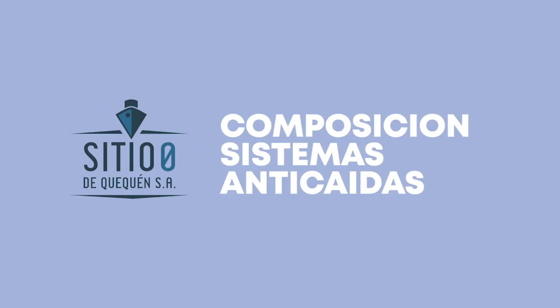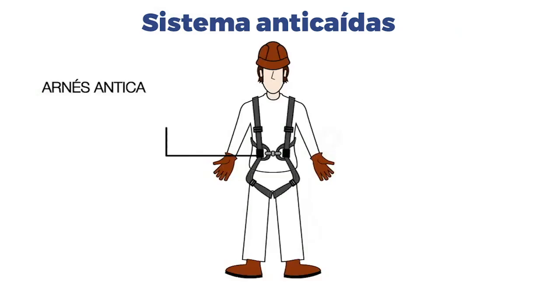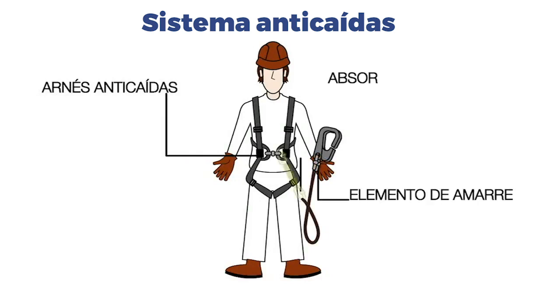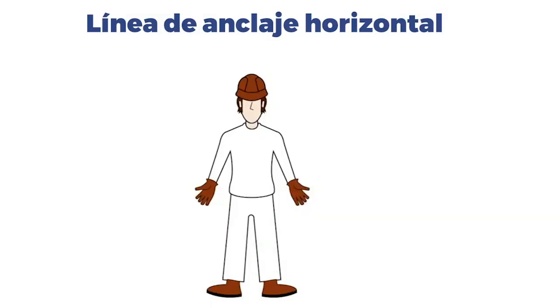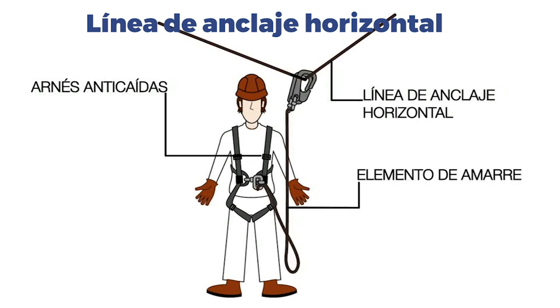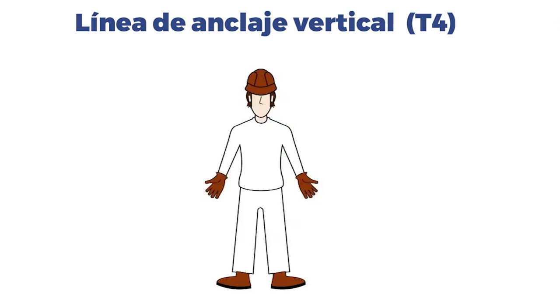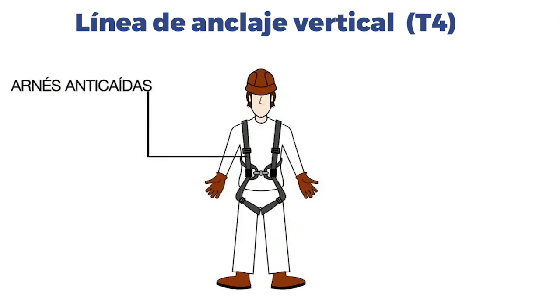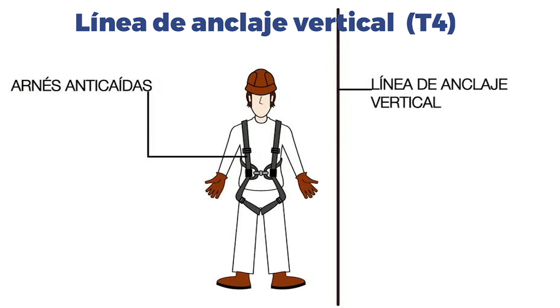Composición de sistemas anticaídas. El sistema anticaídas está formado por arnés anticaídas, absorbedor de energía y elemento de amarre. Incluye también línea de anclaje horizontal, arnés anticaídas y elemento de amarre. Para la línea de anclaje vertical T4: arnés anticaídas, línea de anclaje vertical y dispositivo anticaídas.